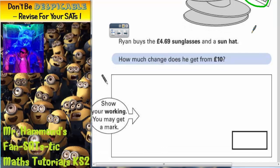Well, the first thing we're going to have to do is find out the total amount that he spends. So he spends £4.69 on sunglasses and then he spends an extra £3.29 on the hat.